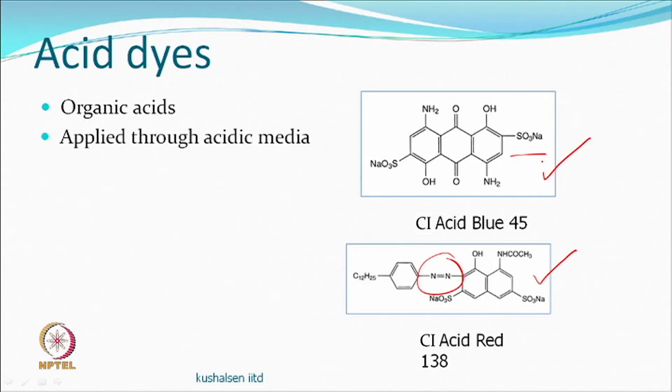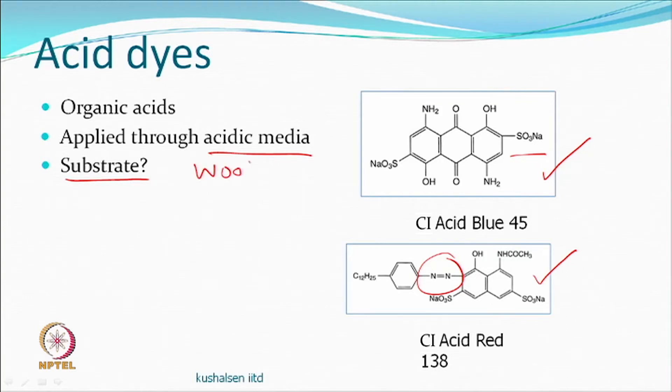Acid dyes are generally organic acids — you can react them with alkali to make sodium salts. They are applied through acidic medium. The substrate — wool, silk, and nylon — assumes a positive charge under acidic conditions, so the anionic dye gets attracted. Various controlling mechanisms ensure the right kind of bonding. The dye-fibre interaction is ionic.